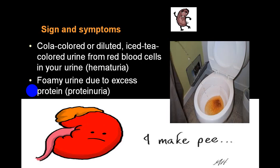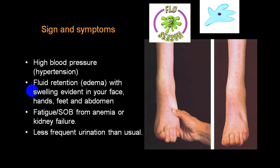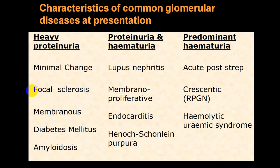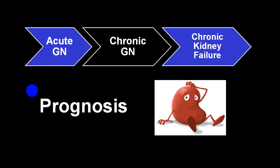Coca-cola colored or diluted iced tea colored urine is the classical hematuria presentation. Foamy urine is also a common finding. There are three types of presentation: heavy proteinuria — typical of minimal change disease, focal sclerosis, membranous variety, diabetes mellitus, or amyloidosis; predominantly hematuria — in post-streptococcal, crescentic variety, or hemolytic uremic syndrome; and a mixed picture in lupus, membranoproliferative, infective endocarditis, or Henoch-Schönlein purpura.